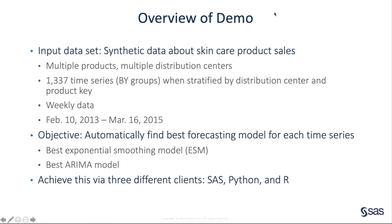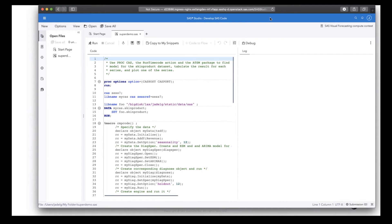Now let's start the actual demo. I'll be running three different programs which do pretty much the same thing, but written in three different languages. The code that is sent to the server is always the same — defined via a variable named CMP code in all the demo programs. It uses the automatic time series modeling package to determine the best model for forecasting each time series in the dataset. The dataset we use is the skin product dataset, a synthetic dataset consisting of sales information for various skin care products. When we use product key and distribution center as by variables, it contains 1,337 time series. I'll be using SAS as the client and the CAS procedure to call the CAS action that runs the code.